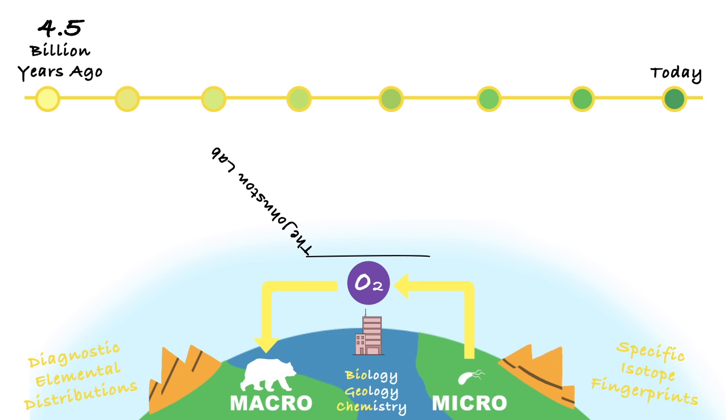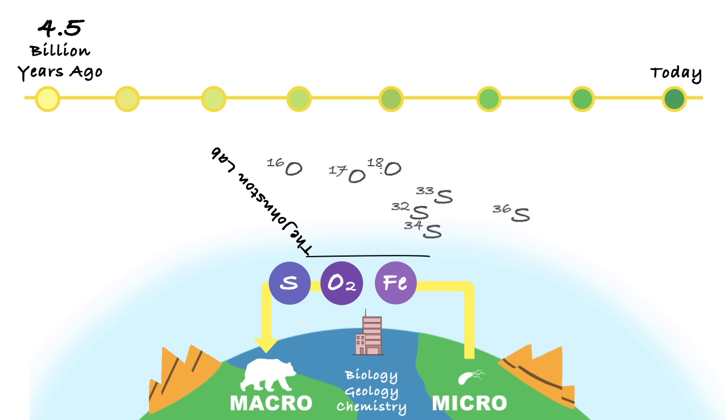Under the hood of the Johnston lab is the detailed study of the elements oxygen, sulfur, iron, and carbon, the sum of which reflect all the major players in the evolution of Earth's surface.